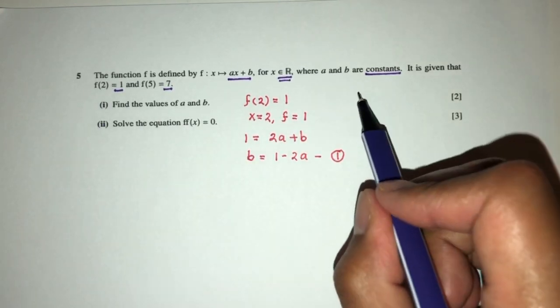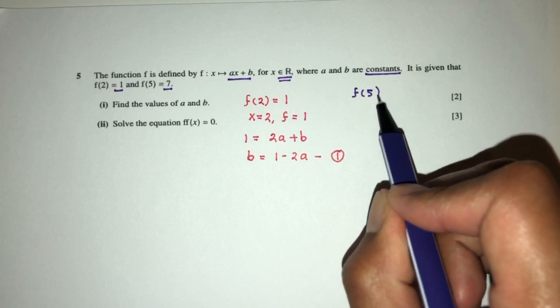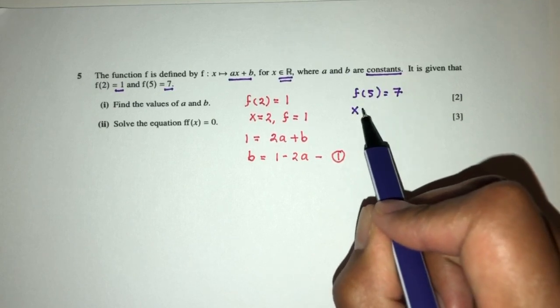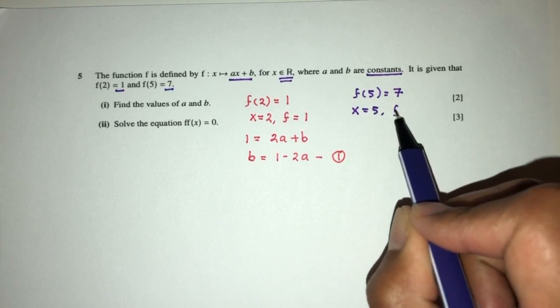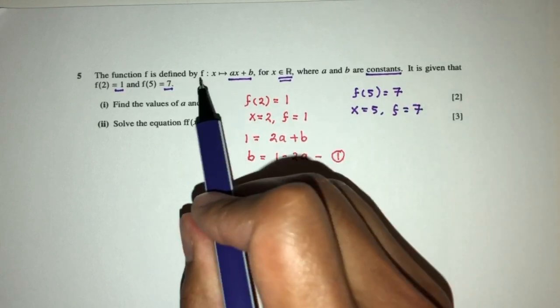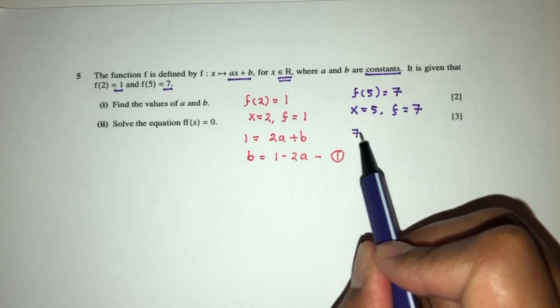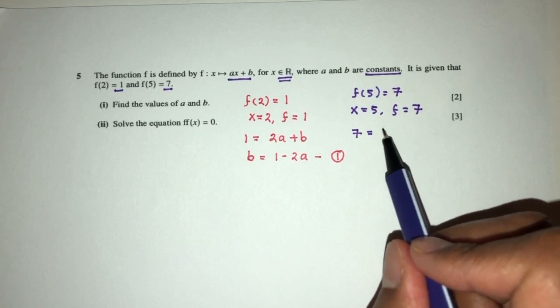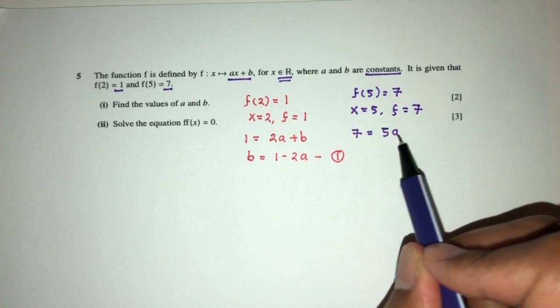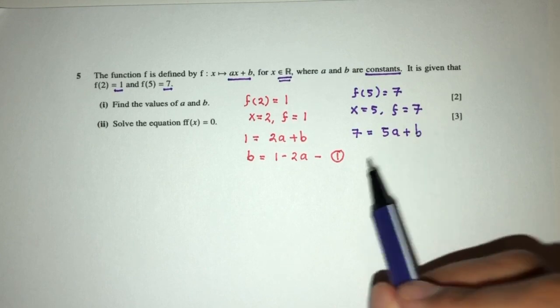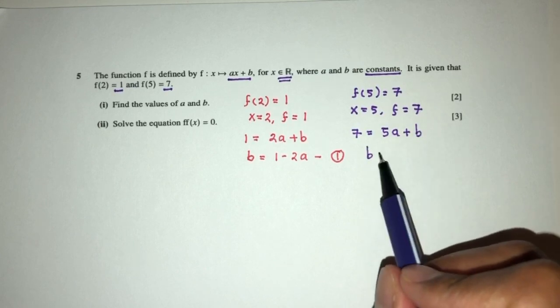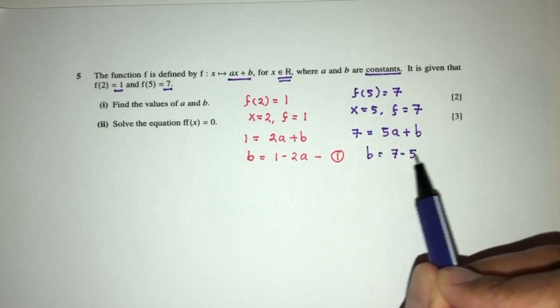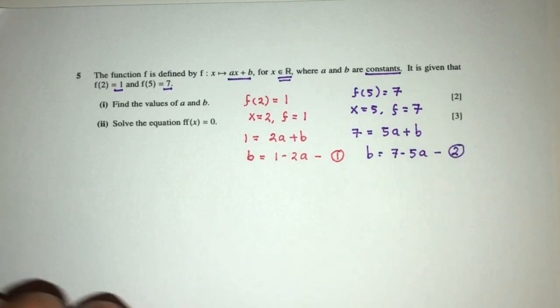Now for this one, f(5) is equal to 7, which means when x is equal to 5, the value of f is 7. Replace back, you will have 7 is equal to 5a plus b. Now let's make b become the subject, so b will be 7 minus 5a. That will be my equation number 2.